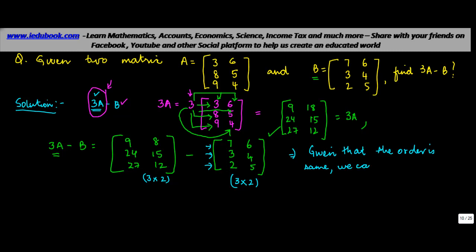How do we do that? We subtract each of the corresponding elements of matrix B from each element of matrix 3A. So we have 9 here and 7 here, so we put 9 minus 7 which gives us 2. Similarly we pick up 24 which is the second row first element.